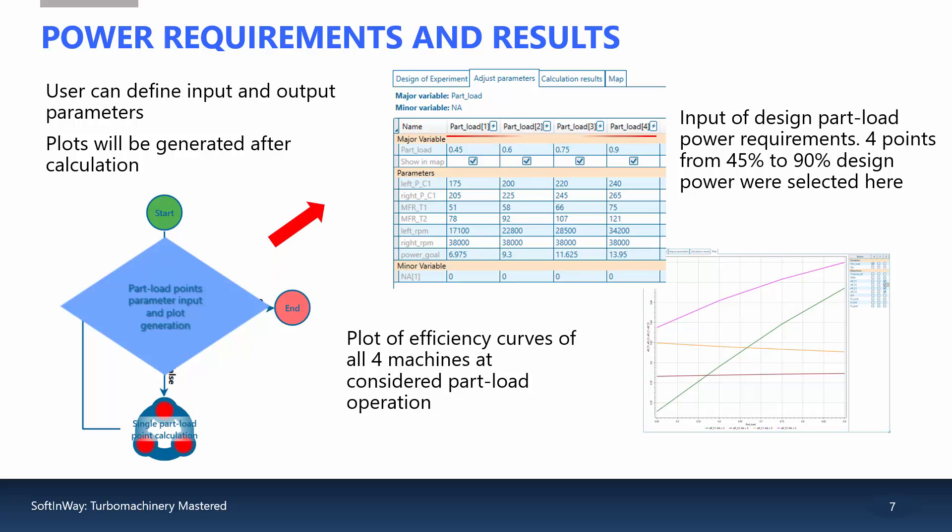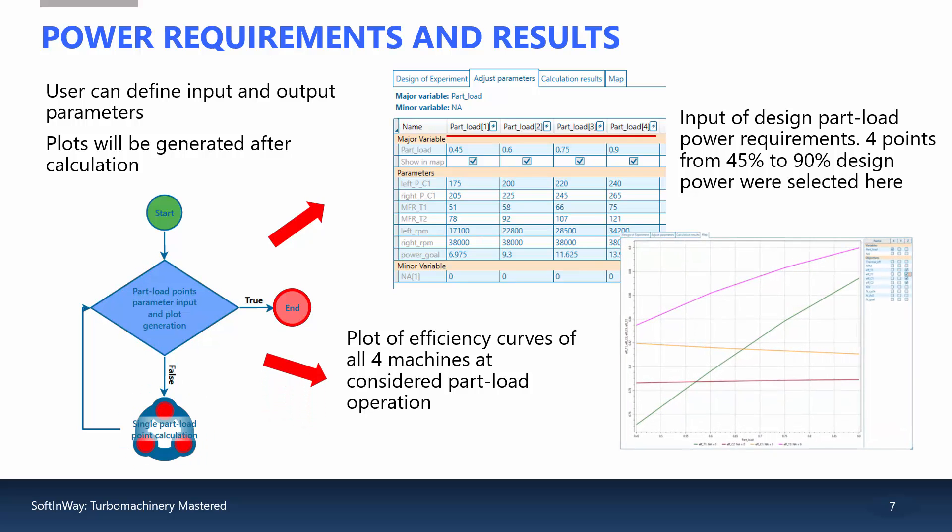For our case, four desired part load points corresponding to four required output powers are provided as input along with appropriate ranges for the control parameters previously mentioned. Once the calculation is done, the map block can generate plots based on user-defined interests.